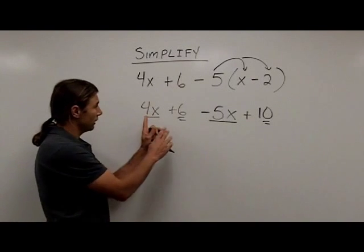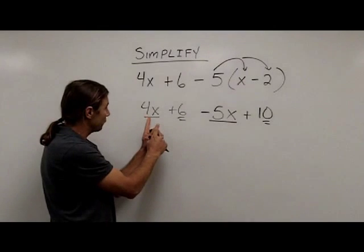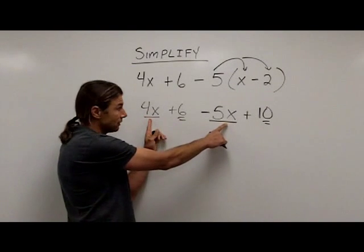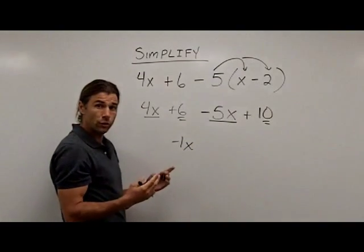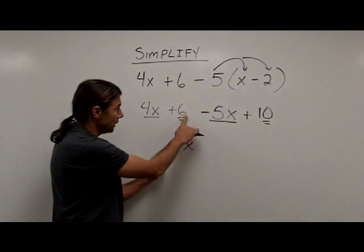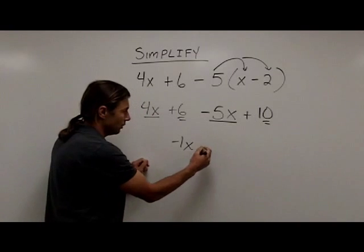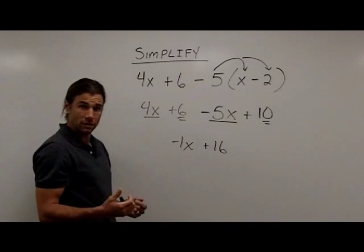So I'll start by combining the 4x and the negative 5x. Well, if I add a 4x to a negative 5x, that's going to give me a negative 1x. Now I'm going to go through and combine my constant terms, the positive 6 and the positive 10. When I combine those together, I'll get a positive 16.